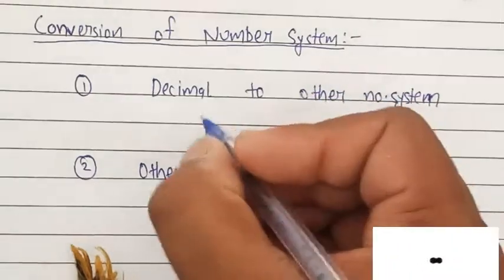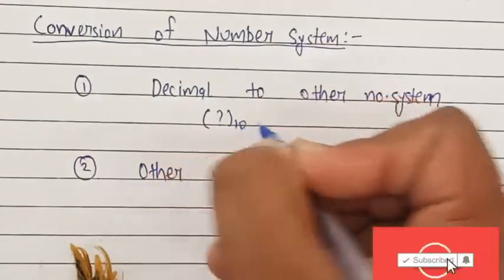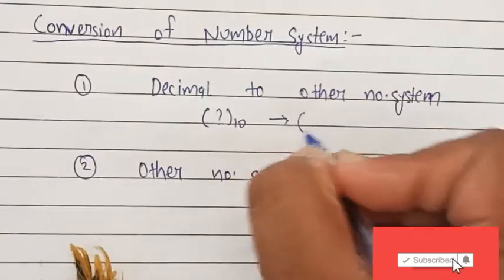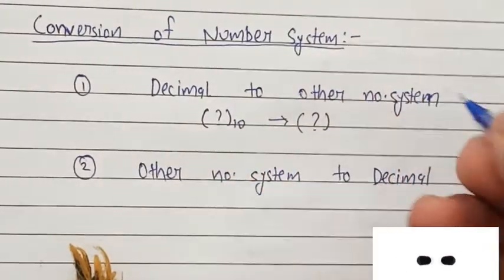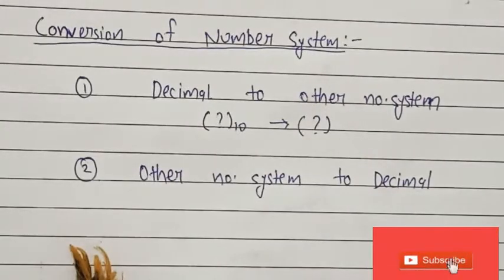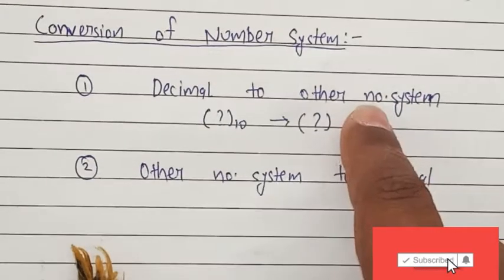In this case, let's suppose that you have some value in decimal and you have to convert it to some other number system. And what are the other number systems? Binary, octal, and hexadecimal. So there are the remaining three.